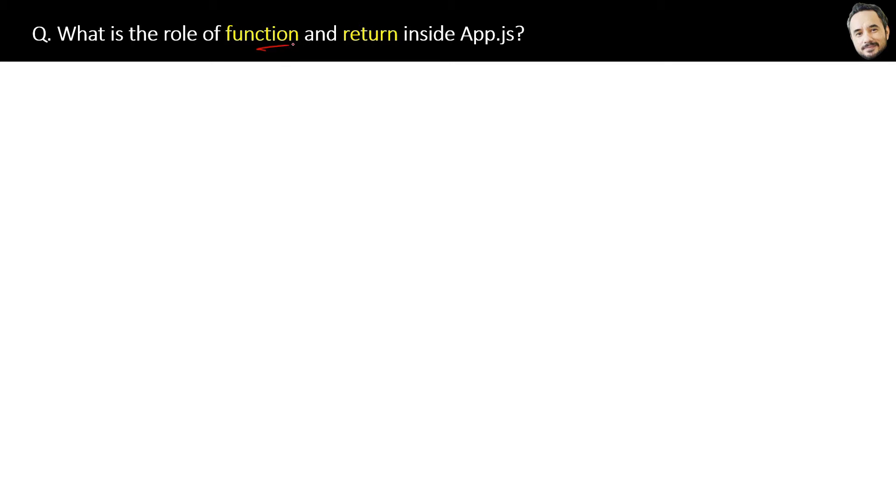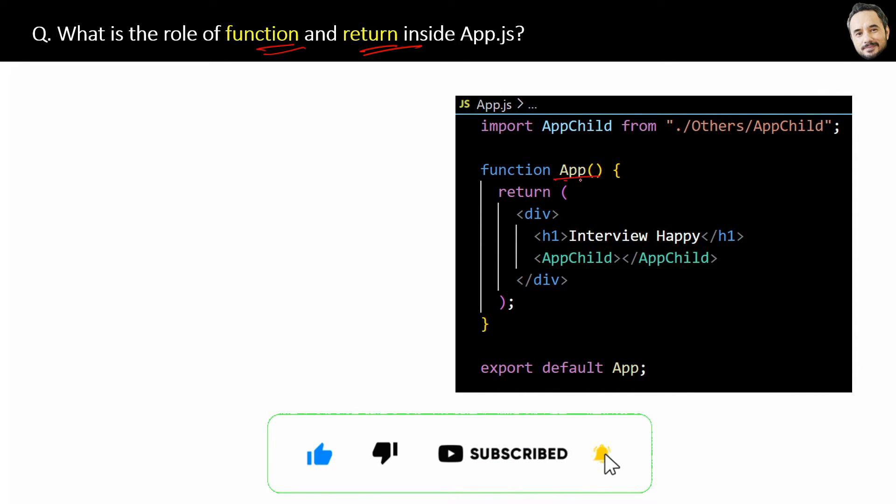What is the role of function and return statements inside App.js? If you see the App.js code, then here you will find this function starting with the function keyword.